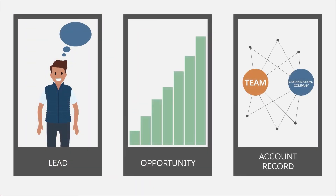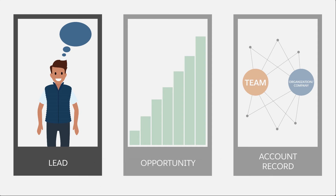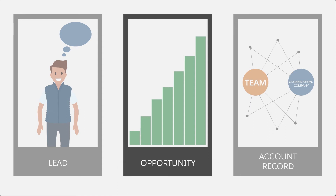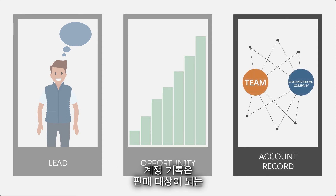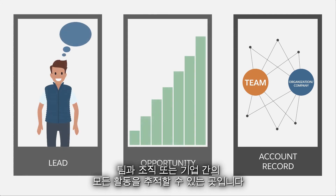Let's recap. A lead is a person who expressed some interest in your products or services. An opportunity is a sale that you're working on. The account record is where you track all activities between your team and the organization or company that you're selling into.